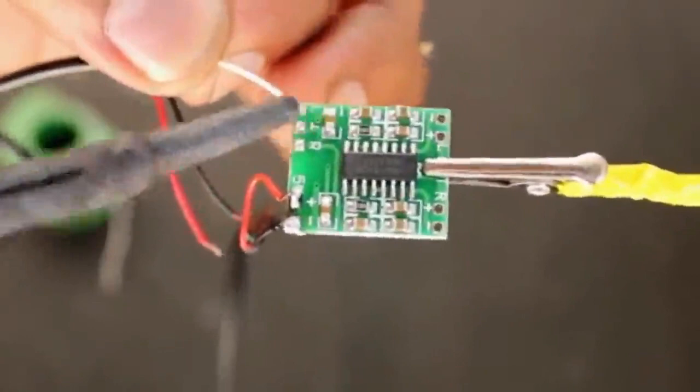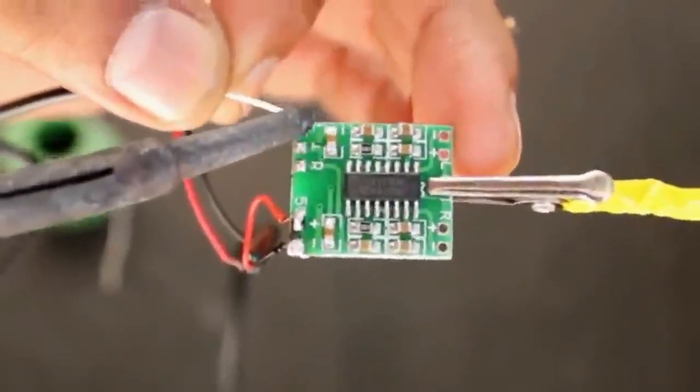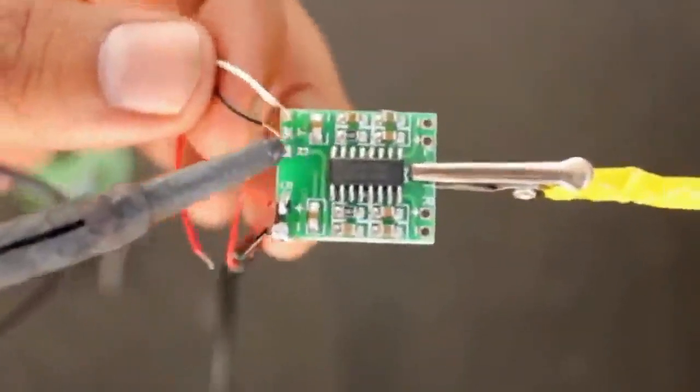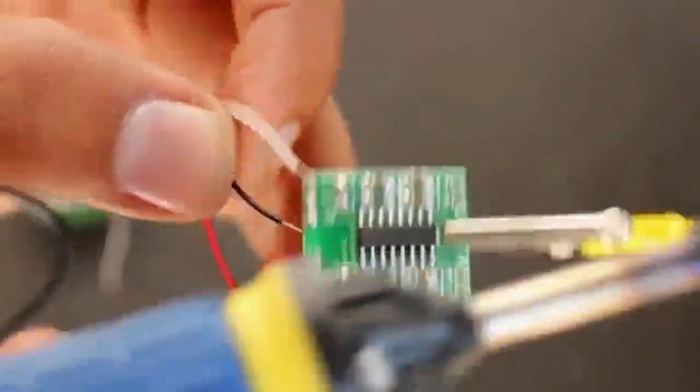Then solder the 3.5mm jack wire. It contains three color wires: white, red, and black. Solder the white wire for the right channel, red wire for the left channel, and black for ground.